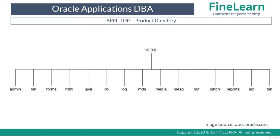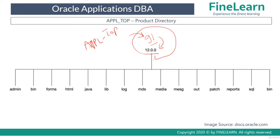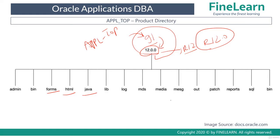When you go to the GL directory, you can see several directories under it. Under GL, first you will see a directory called 1200, representing R12 basically. This directory structure is followed for all products as well — when you go to APPL_TOP and then into GL, you'll see the 1200 directory. This has been introduced from release 12.0 and continues through release 12.2. All directories under it contain forms, HTML files or pages, Java files or JAR files, message files, and report files — all related to that specific product.